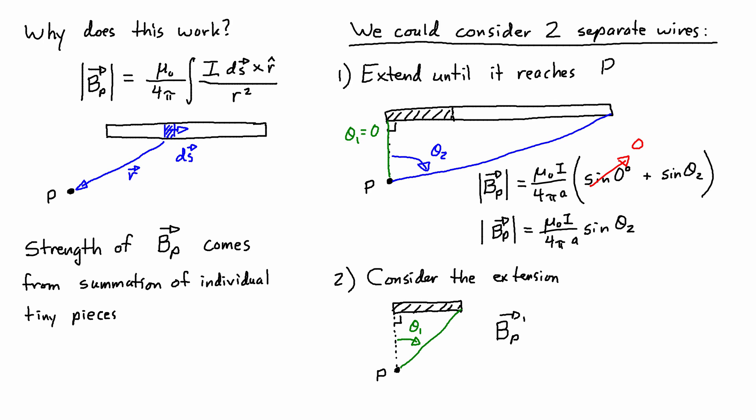I'm going to call this B' just to distinguish it from the first wire that we considered. And this is equal to mu naught I over 4 pi A times sine of theta 1.